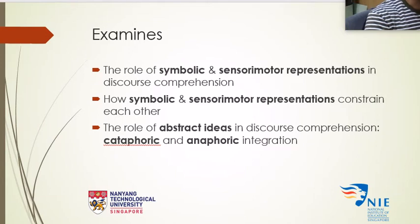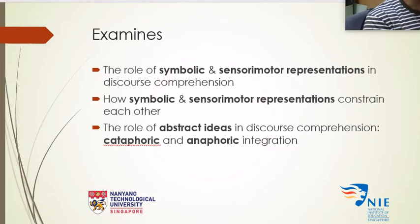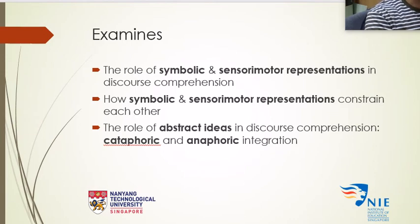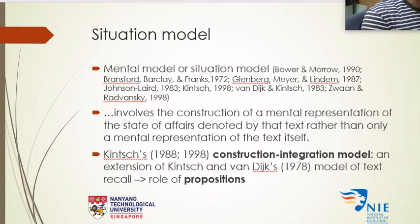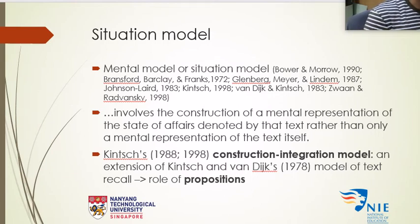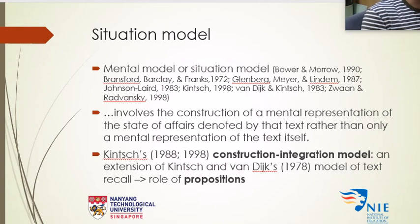This paper basically examines the role of symbolic and sensory-motor representations in discourse comprehension, how symbolic and sensory-motor representations constrain each other, and also the role of abstract ideas in discourse comprehension. He also focuses especially towards the end — the conclusion of the paper — on the role of cataphoric and anaphoric integration of the text. So what is a situation model? The term situation model refers to the mental representation that's generated after we read or listen to a text.